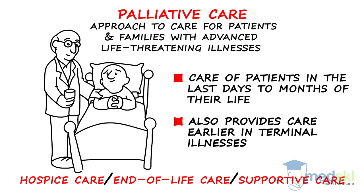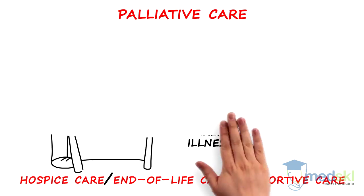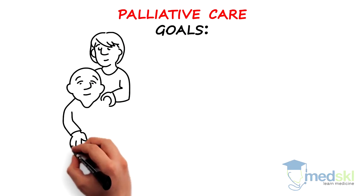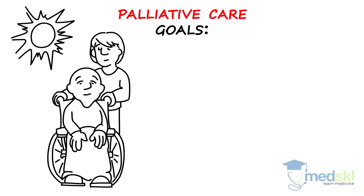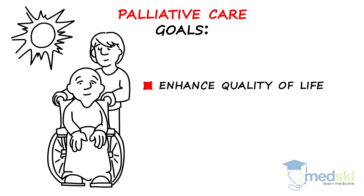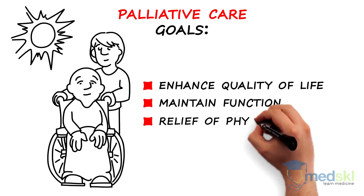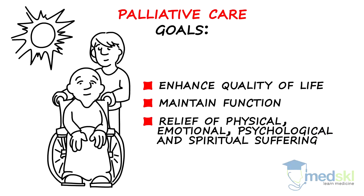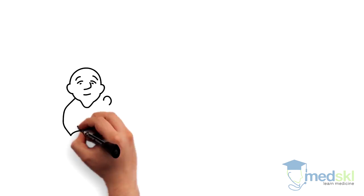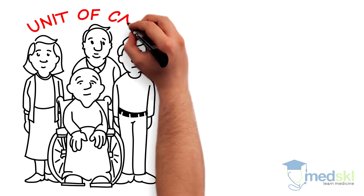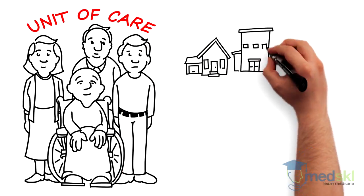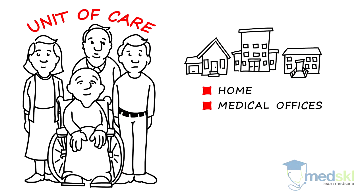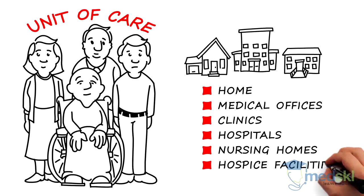Hospice may refer to a program or to a facility where care is delivered. The goal of palliative care is to help patients live as well as possible by enhancing their quality of life and maintaining their function. Relief of physical, emotional, psychological, and spiritual suffering is paramount. The patient and family are considered the unit of care. Care is provided in the location where it is needed, including home, medical offices, clinics, hospitals, as well as nursing homes and hospice facilities.